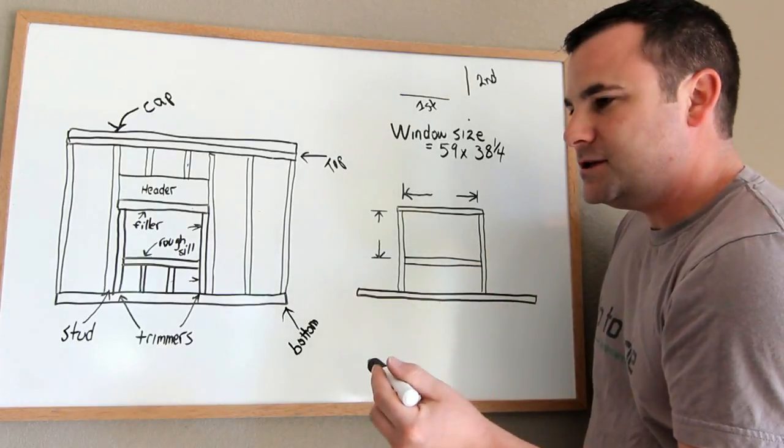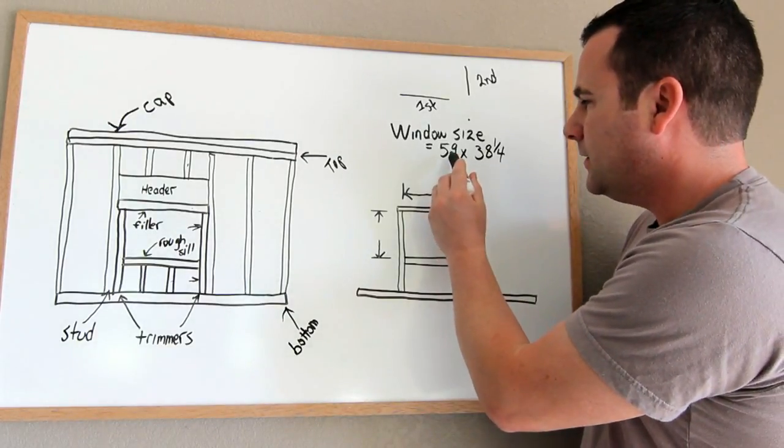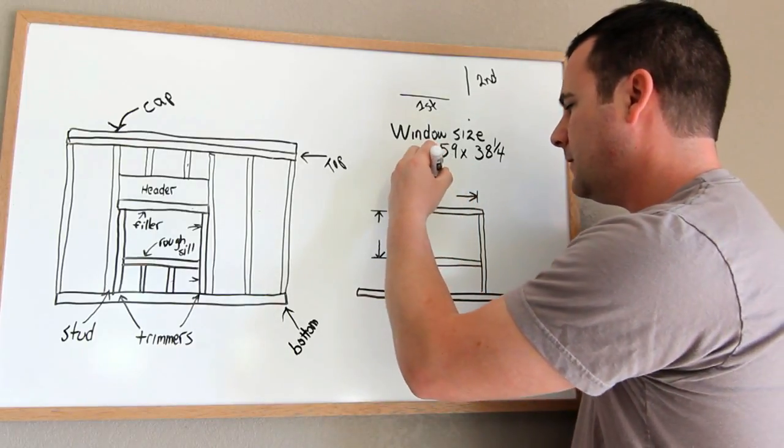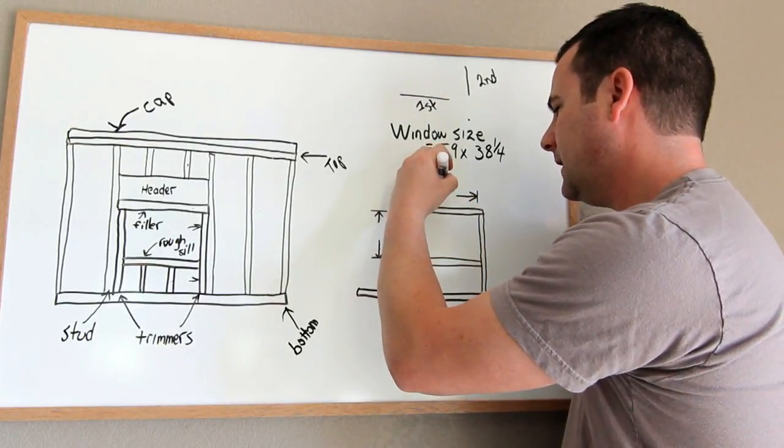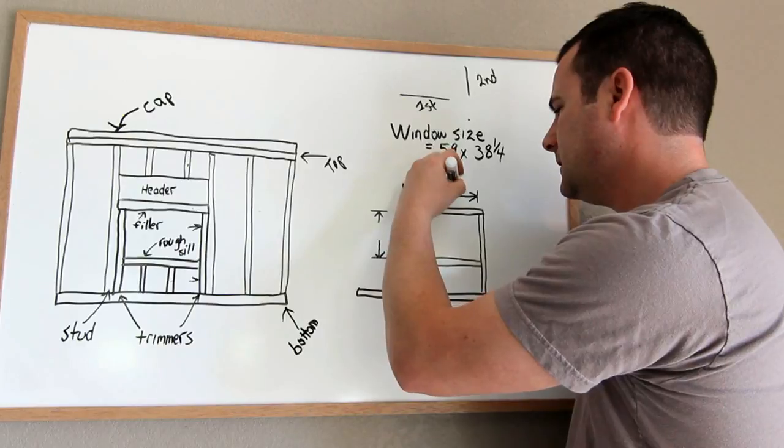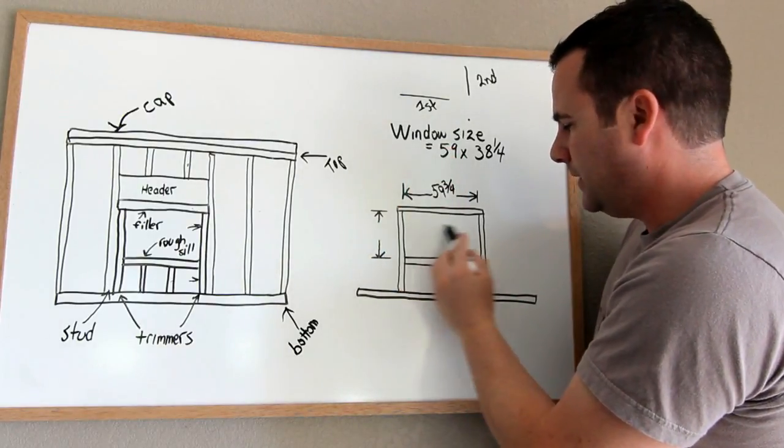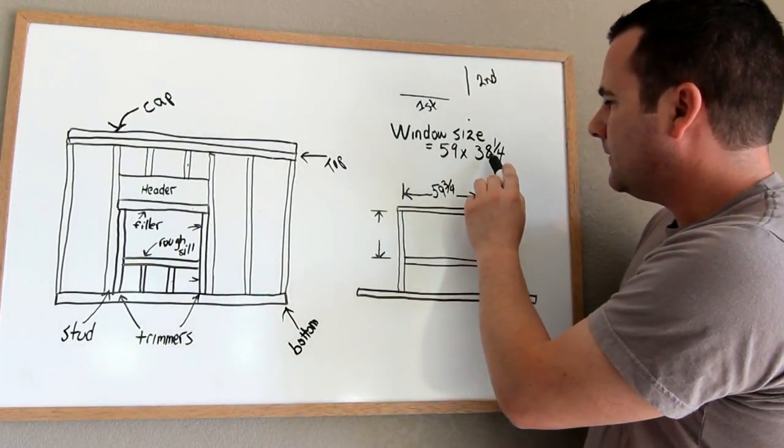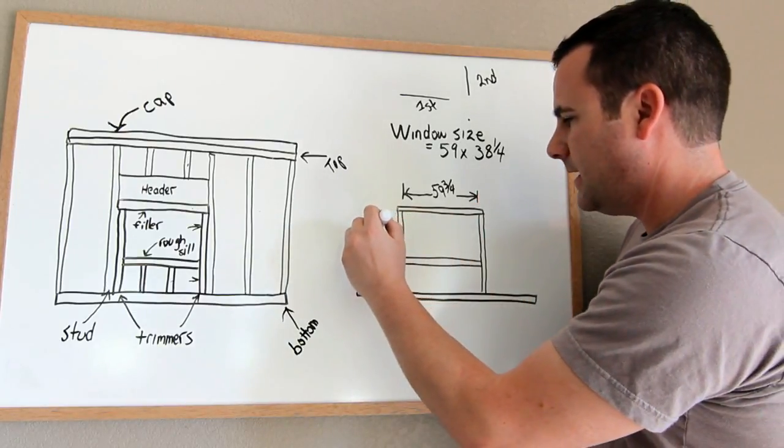So basically you just take the size of your window, 59, add 3 quarters. So 59 and 3 quarters is what I want for the clear opening in width. And then 38 and a quarter plus 3 quarters is 39.